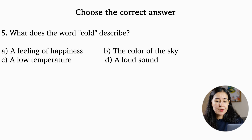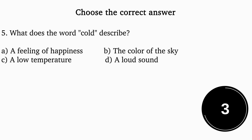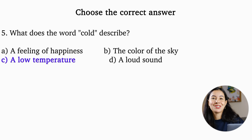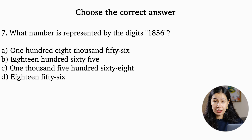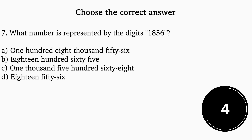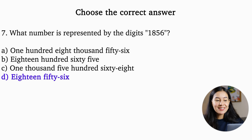What does the word 'cold' describe? A feeling of happiness, the color of the sky, a low temperature, or a loud sound? The answer is: a low temperature. What number is represented by the digits? The answer is D — 1856. We've finished with the vocabulary part.